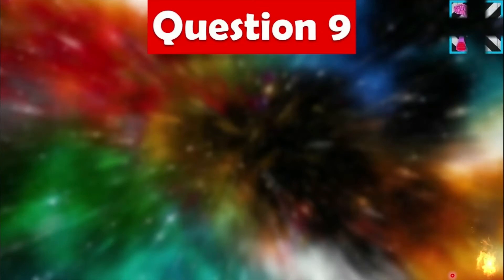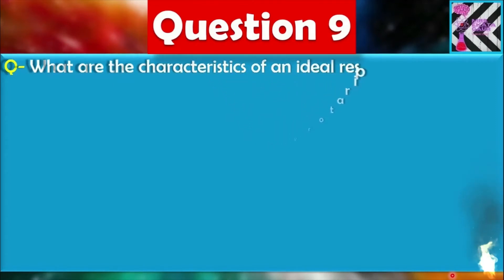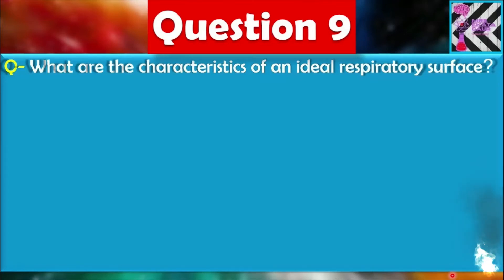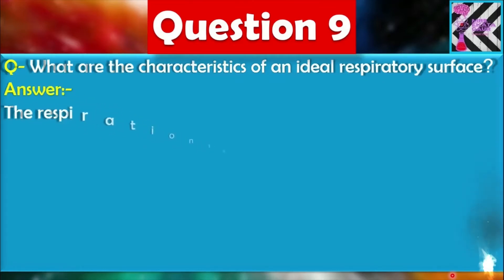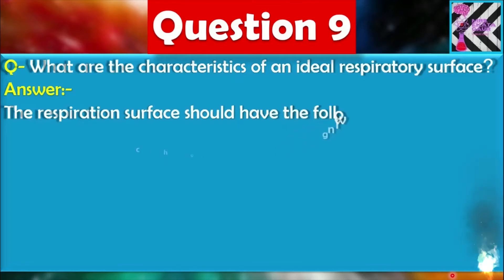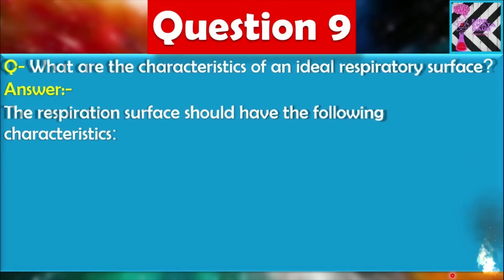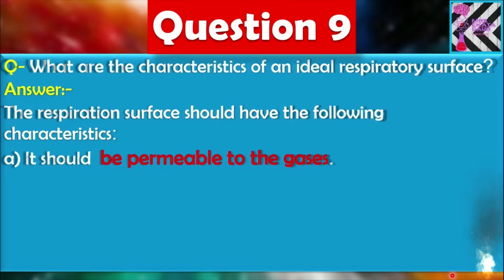Question number nine: What are the characteristics of an ideal respiratory surface? The respiratory surface should have the following characteristics. First, it should be permeable to gases — permeable means it must have small pores to allow gases to pass through.